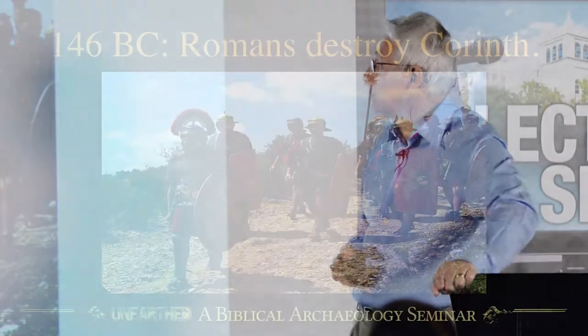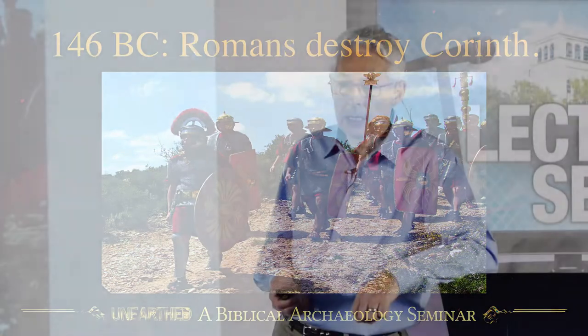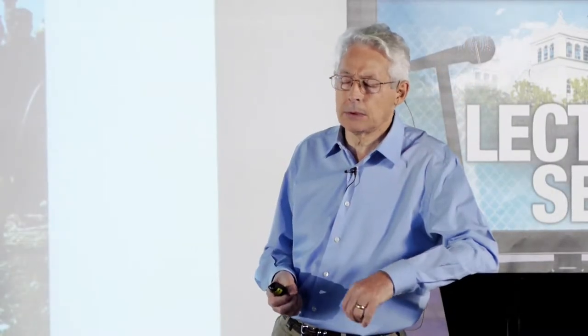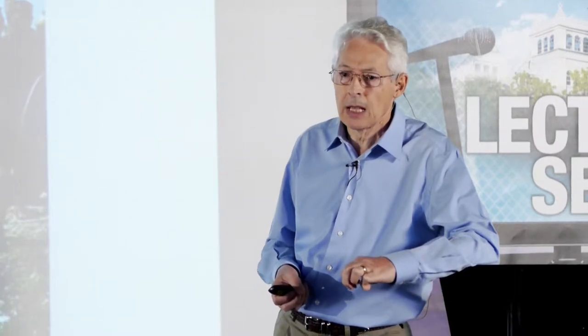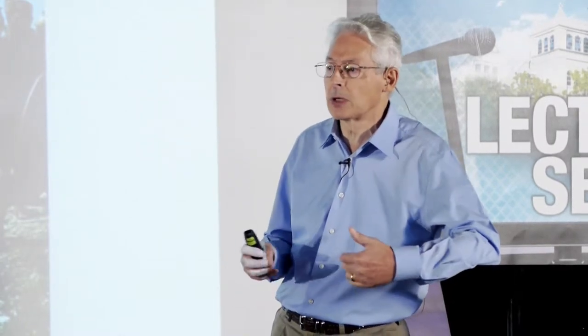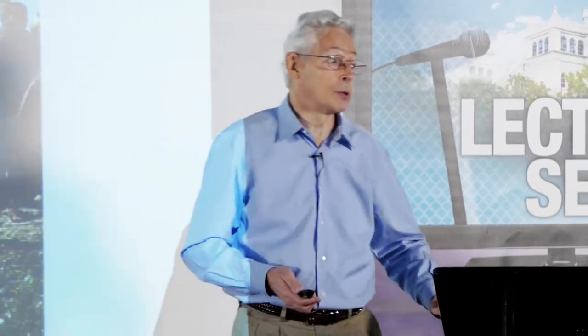What happened is the Romans marched in under their leader, General Mummius, and utterly destroyed Corinth. The Greek army was totally destroyed by the Romans. They didn't have the discipline or the organization — they just weren't up to it. The Roman army was strong, large, and very well-disciplined, so the Romans really thrashed them.